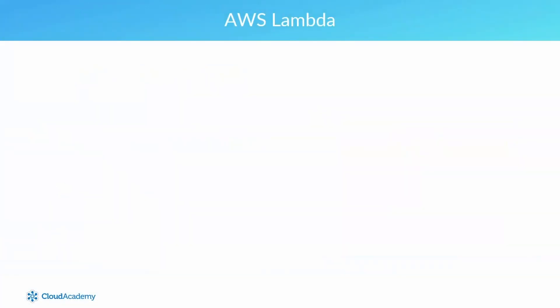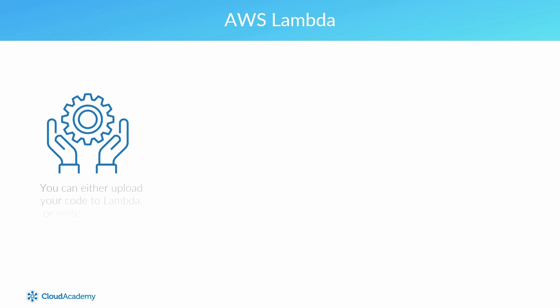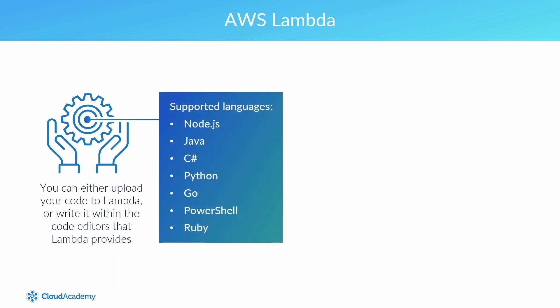So how does it work? There are essentially four steps to its operations. Firstly, AWS Lambda needs to be aware of your code that you need to run, so you can either upload this code to AWS Lambda or write it within the code editors that Lambda provides. Currently, AWS Lambda supports Node.js, Python, Java, C Sharp, Go, and also Ruby.